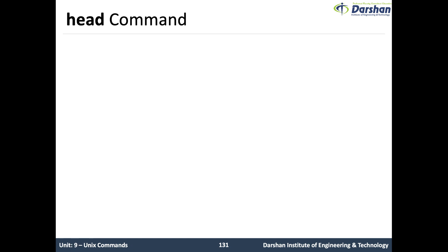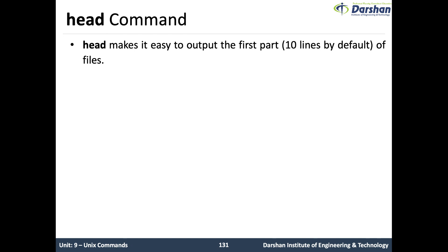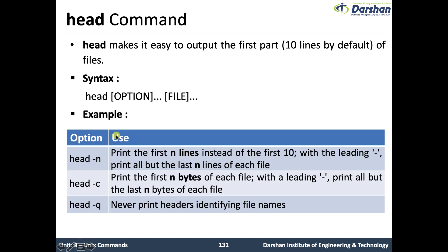The next command is the head command. This command makes it easy to output the first part — 10 lines by default — of a file. The syntax is: head [options] [filename]. Options: -n prints the first n lines instead of the default 10; suppose you want to display only 5 lines, input 5 for n. -c prints the first n bytes of each file; with a leading dash it prints all but the last n bytes. -q never prints the header identifying file names.